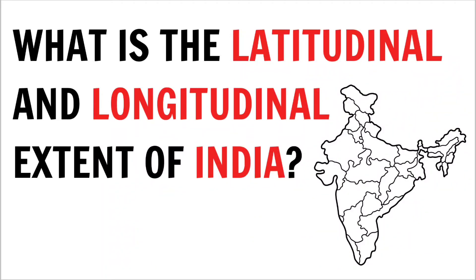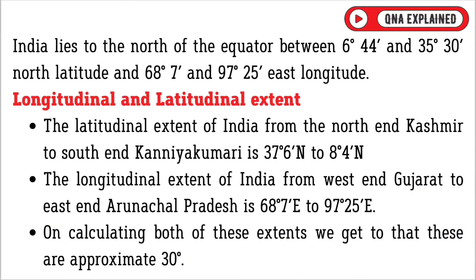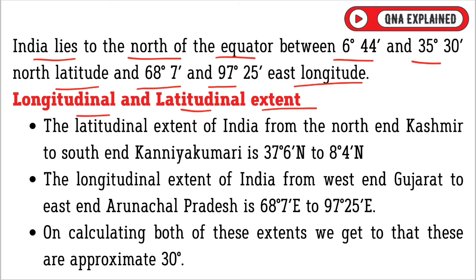What is the latitudinal and longitudinal extent of India? India lies to the north of the equator between 6 degrees 44 minutes and 35 degrees 30 minutes north latitude, and 68 degrees 7 minutes and 97 degrees 25 minutes east longitude.